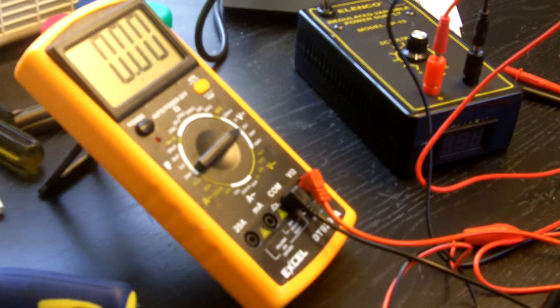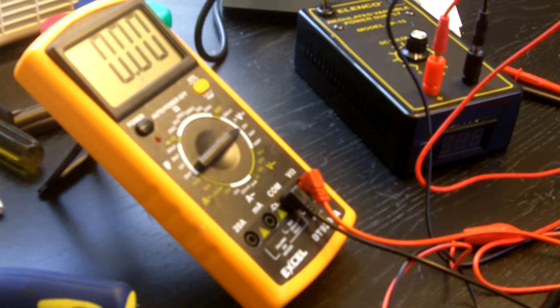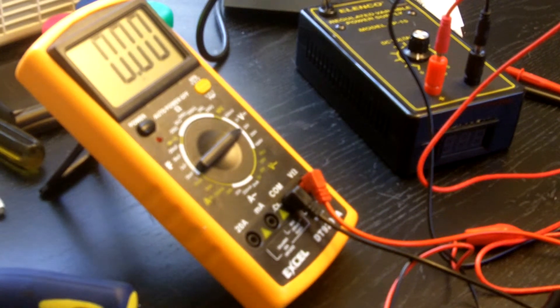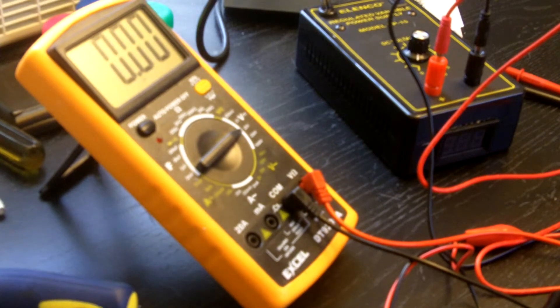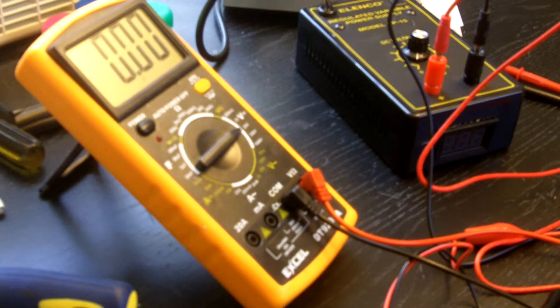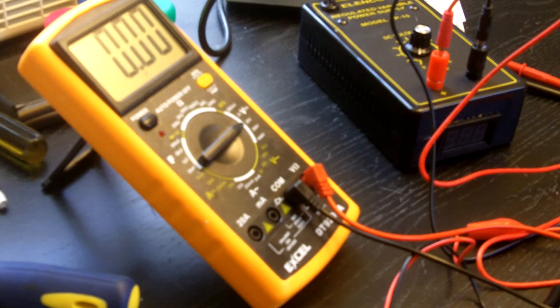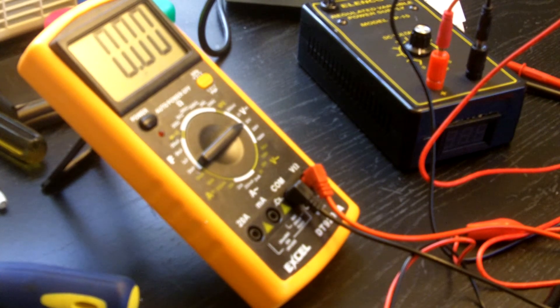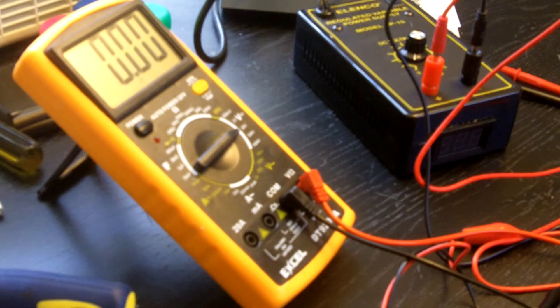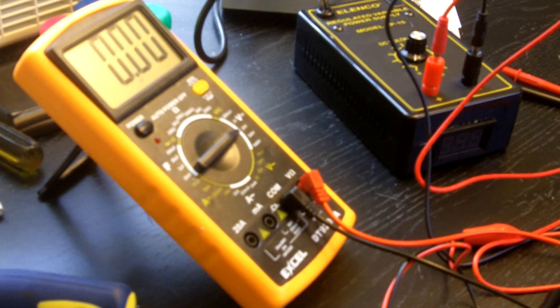Alright, so that concludes the video of the digital voltage panel meter modification that I made to my Lenco regulated variable voltage power supply model XP-15. If you have any questions, comments, or concerns, please post your comment in the comments section of this video. Please don't forget to like this video and please do not forget to subscribe to my channel. I will see you next video on AA Computers and Technology.